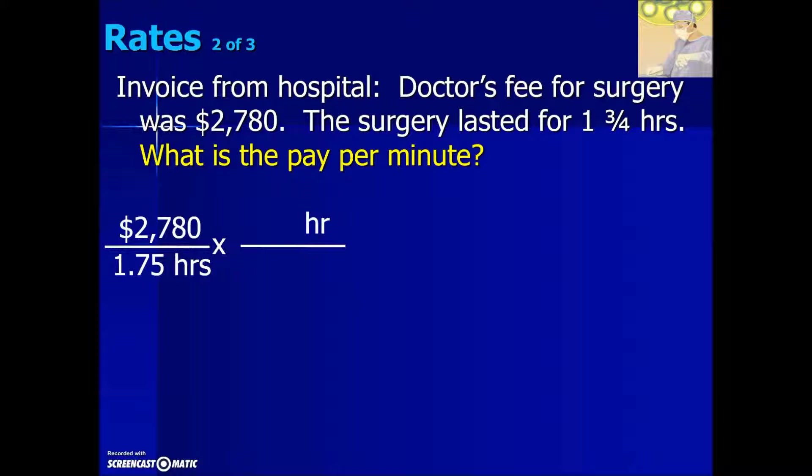So in our conversion we will set up our conversion factor fraction so that our representation is in the numerator. One hour is equivalent to 60 minutes so there's our relationship set up. Next we can cancel out common factors and simplify the fraction multiplication. Simplifying further taking the numerator divided by the denominator results in a price of or a pay of $26.48 per minute.